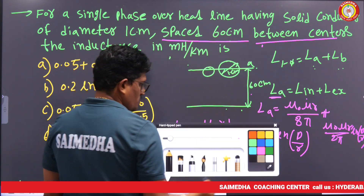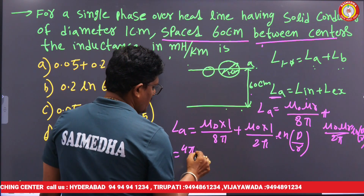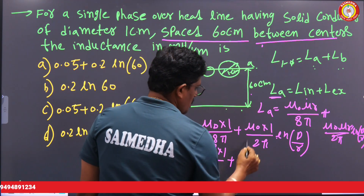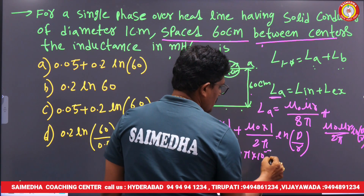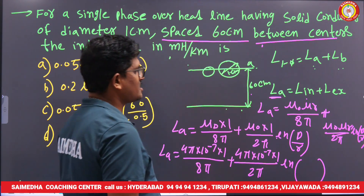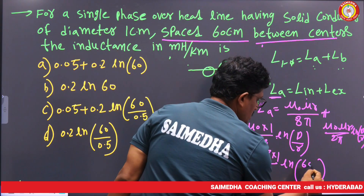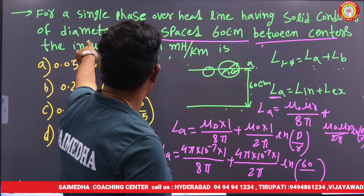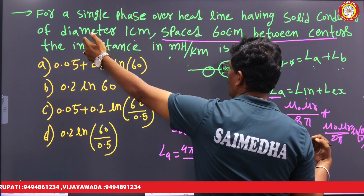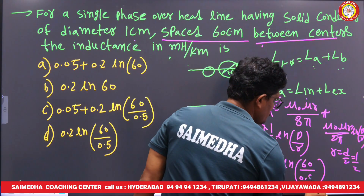Substituting: La = (4π × 10⁻⁷ / 8π) + (4π × 10⁻⁷ / 2π) · ln(60 / r). The spacing is 60 cm and the diameter is 1 cm, so the radius r = d/2 = 0.5 cm. Therefore: La = (4π × 10⁻⁷ / 8π) + (4π × 10⁻⁷ / 2π) · ln(60 / 0.5).